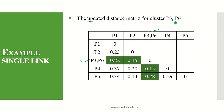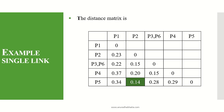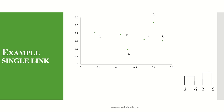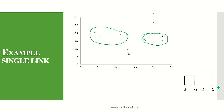From the updated distance matrix, we again find the minimum value. The minimum is 0.14, which is the distance between P2 and P5. So the second cluster formed is {P2, P5}. This is plotted on the graph, and the dendrogram now shows {P3, P6} as one cluster and {P2, P5} as the second cluster.